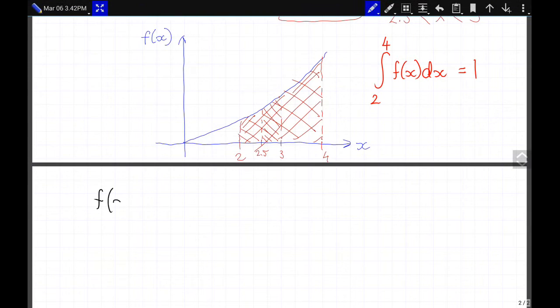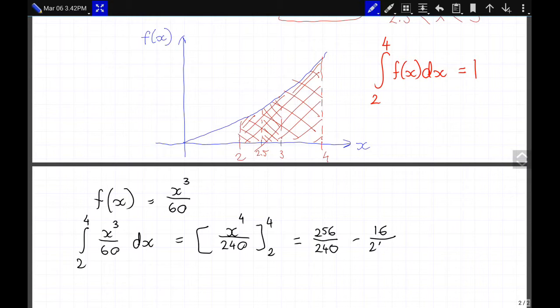So we have our f(x), x cubed over 60. And now let's see, the integral from 2 to 4 of x cubed over 60 dx is x to the 4 over 4 times 60 is 240 from 2 to 4. Now 4 to the power of 4 is 256 and that's over 240. And 2 to the power of 4 is 16 over 240, which is 240 over 240 and that is 1.